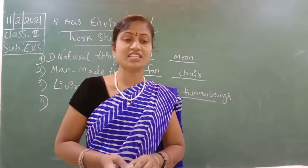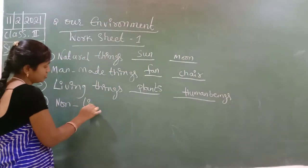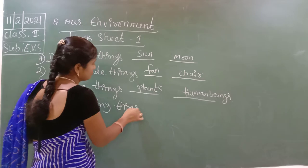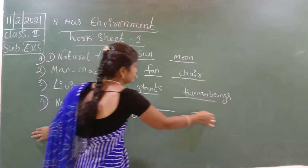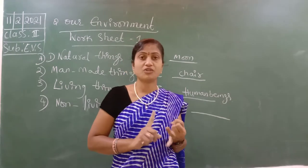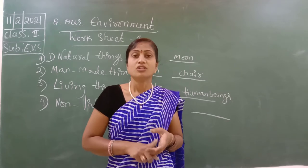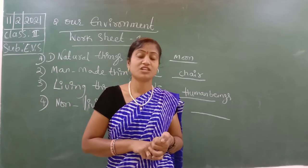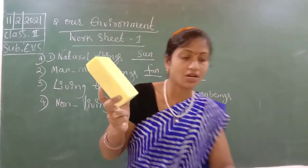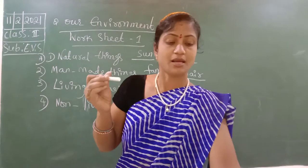Fourth one — non-living things. Non-living things are quite opposite to living things. They do not want food, they do not want water, they do not want air. They don't reproduce. They don't move from one place to another place. Examples: duster, ball, chalk — these all are non-living things.